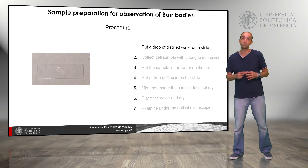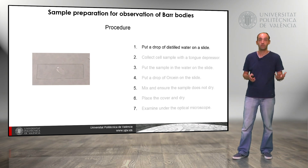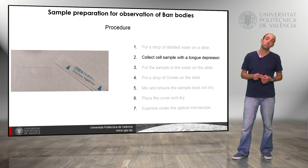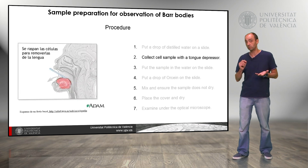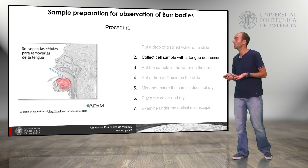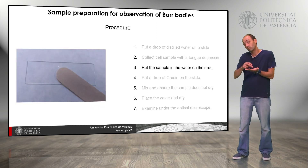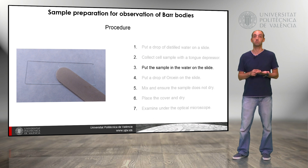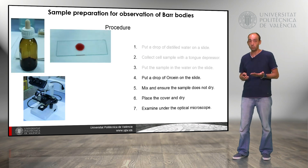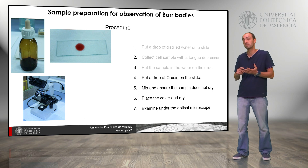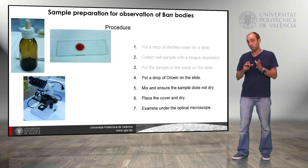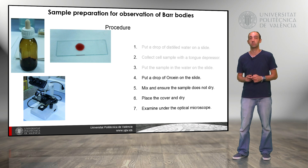The first step is to put a drop of distilled water on a slide. Then we collect the samples using a tongue depressor, which is quite useful for this purpose. We can take those samples from the tongue or from the inner part of the cheek. We take the samples with care and place them on the drop of water on the slide. Then we stain those samples using orcein, mixing well and ensuring that the sample doesn't dry — we have to check periodically. We stain the sample for around 20 minutes.